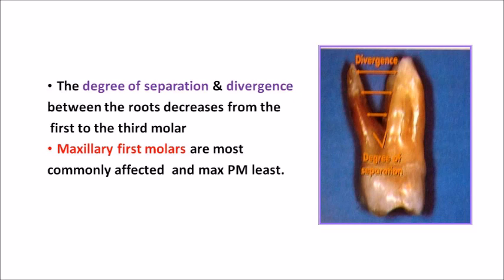There are two more terms: degree of separation and divergence pertaining to root anatomy. Degree of separation is the angle between two diverging roots, and divergence is the distance between two roots. Both degree of separation and divergence between the roots decreases from first molar to third molar, meaning the roots will be closer together as you move from first molar to third molar. It is more divergent in the first molar.